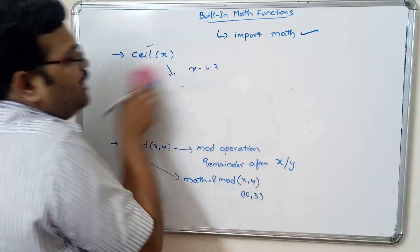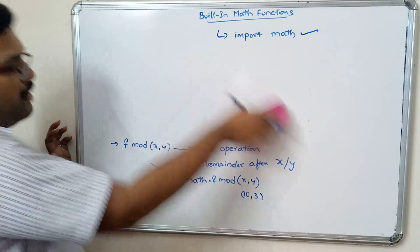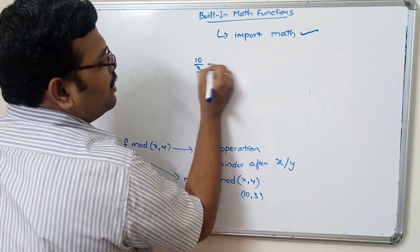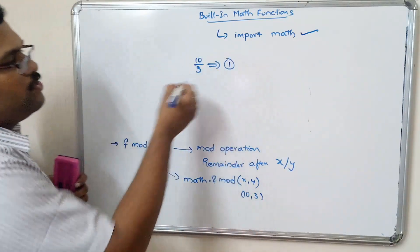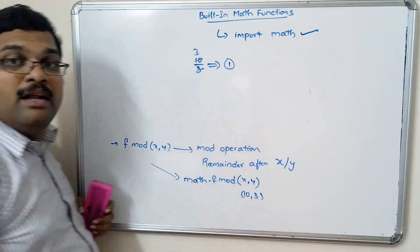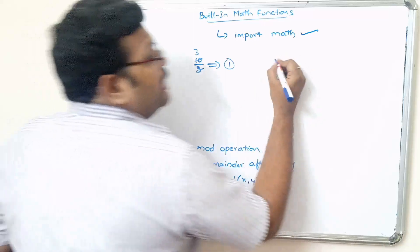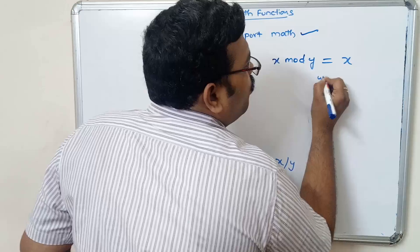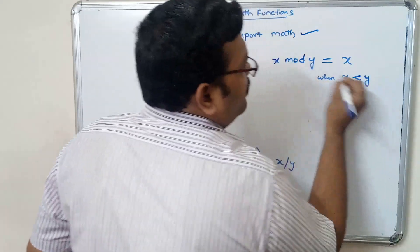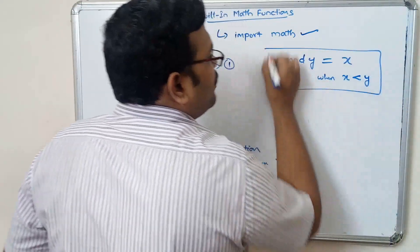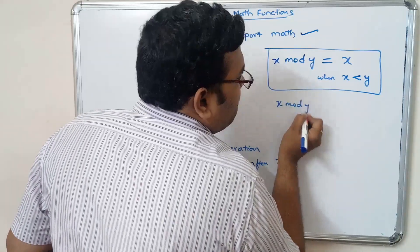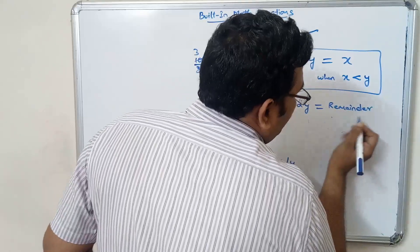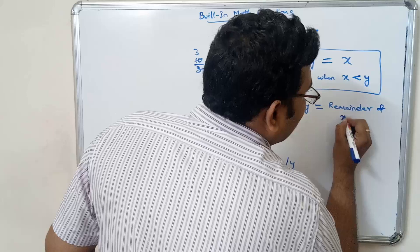It will return the remainder after performing x divided by y. So 10 divided by 3: three threes are nine, so the remainder is 1 — that is the answer. Also note: x mod y equals x when x is less than y, and equals the remainder of x divided by y when x is greater than y.